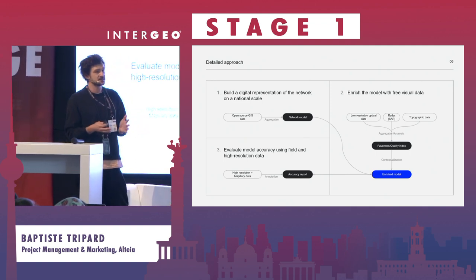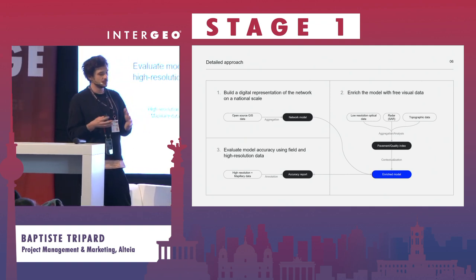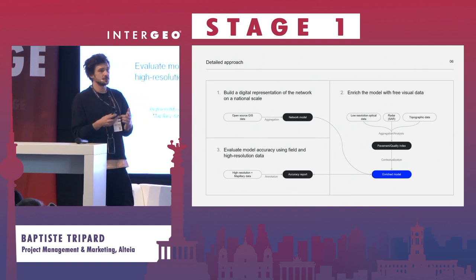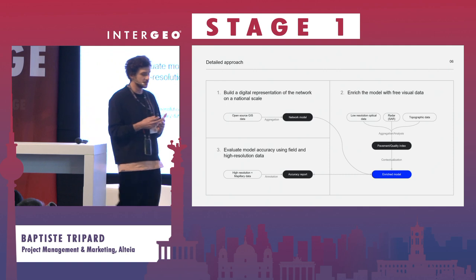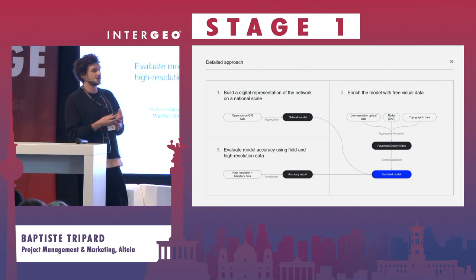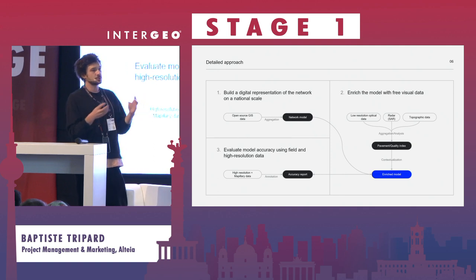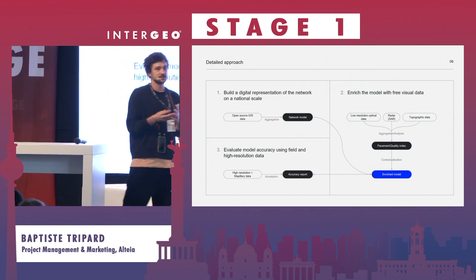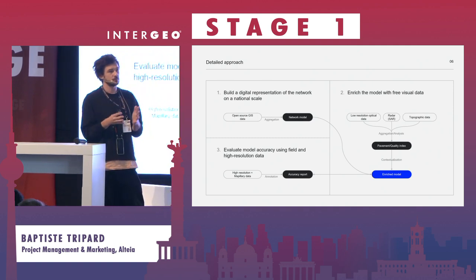The technical workflow had three steps. The first step was to build a digital representation of an entire road network at the country level — in our case for the countries of Peru and Mexico — linking our AI model to all accessible databases available in the cloud and working on aggregation algorithms to build a network model that would be the best representation of that road network.